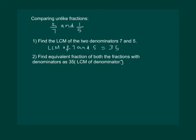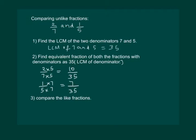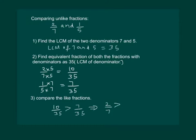Our next step is to find the equivalent fractions of both fractions such that the denominator is 35, that is the LCM of the two denominators. To find the equivalent fraction of 2/7 with denominator 35, we multiply numerator and denominator by 5, giving 10/35. To find the equivalent fraction of 1/5 with denominator 35, we multiply numerator and denominator by 7, giving 7/35. Clearly 10/35 is greater than 7/35, which implies that 2/7 is greater than 1/5.